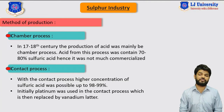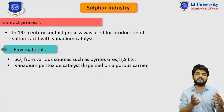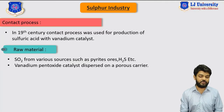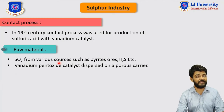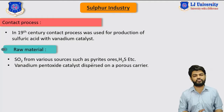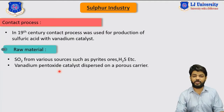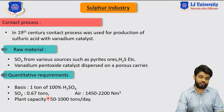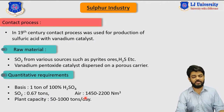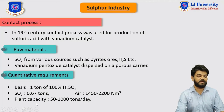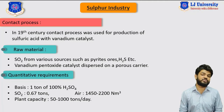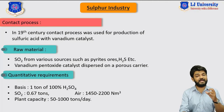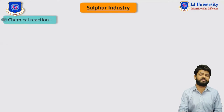The contact process is a relatively new process invented in the 19th century for the production of sulfuric acid using vanadium pentoxide as catalyst. The raw materials required include SO2 from various sources such as pyrites, ore, and H2S gas, along with vanadium pentoxide as catalyst. For production of 1 ton of sulfuric acid, approximately 0.67 tons of SO2 gas and 15,000 to 22,000 normal cubic meters of air are required. Plant capacity is around 50 to 1,000 tons per day.